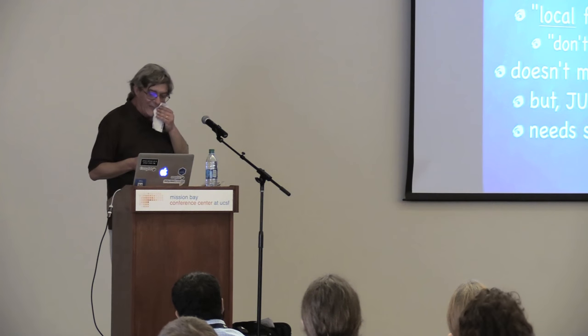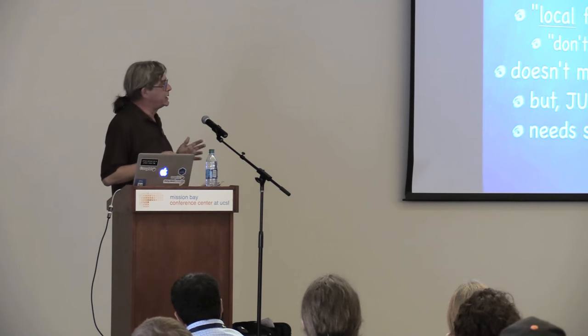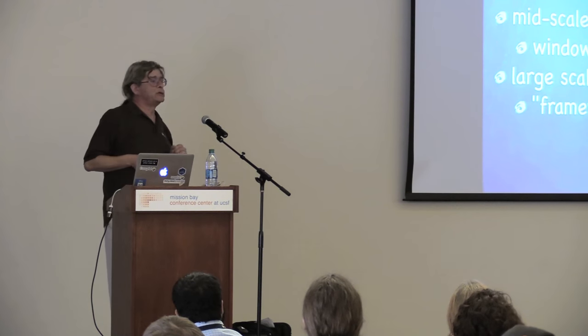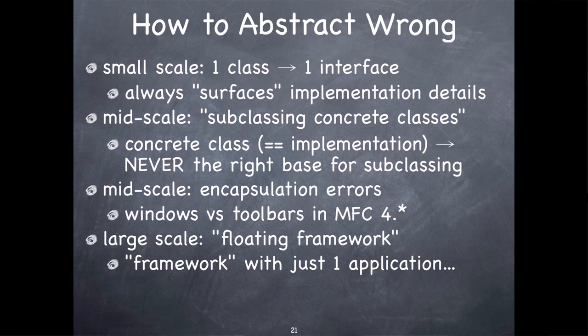I would really like to teach you how to abstract right, but I'm not quite sure I have fully understood it. So I'm definitely going to teach you where I'm much more expert: how do we abstract wrong? First of all, if you want to make an abstract interface, you have one class that works just fine, so you make that interface by essentially abstracting everything that class does — I guarantee you this will surface implementation details that are not conceptually part of the abstraction. Subclassing concrete classes, as Har warned against, is also pretty much that. The concrete class is never going to be the right base for subclassing because it always has implementation details by being concrete.